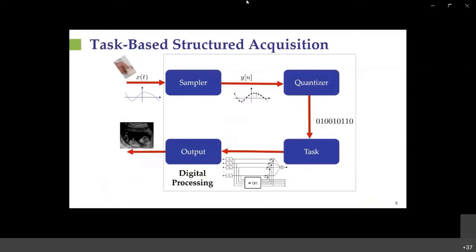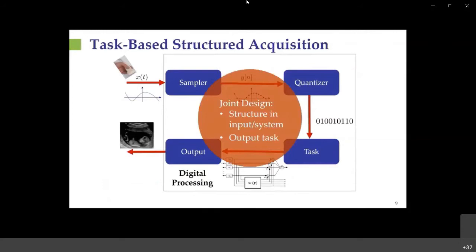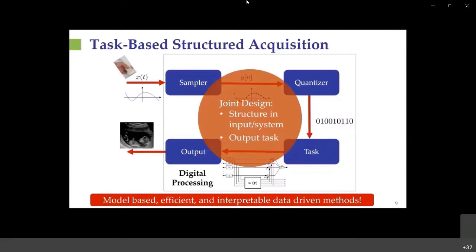What we propose to overcome these data management issues is to fundamentally change the way we design systems by designing all system components jointly rather than optimizing them separately. In this joint optimization, we take into account both the desired outcome or task, and the structure of both the signals and the system. By exploiting structure and task, we can reduce the rate substantially and very often improve system resolution. Furthermore, these ideas of joint design can also be used in deep networks to develop model-based interpretable deep learning methods that nicely reconcile models with learning from data.